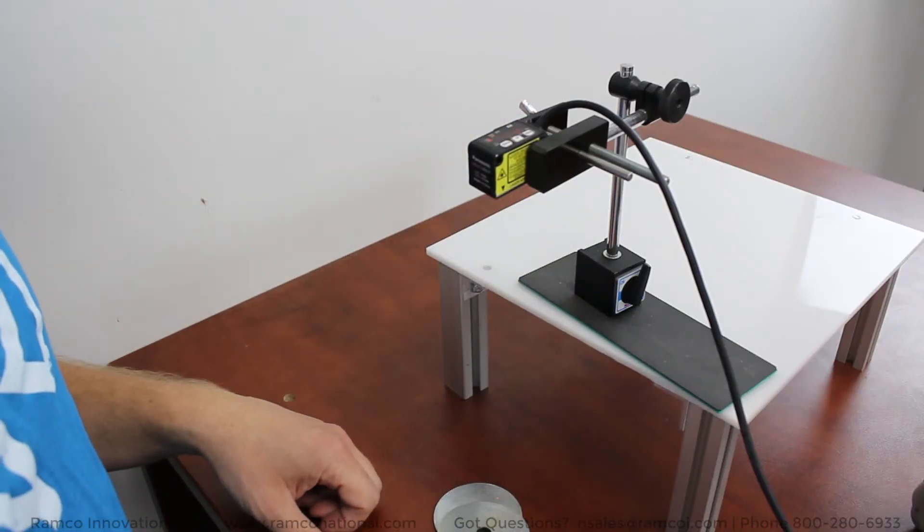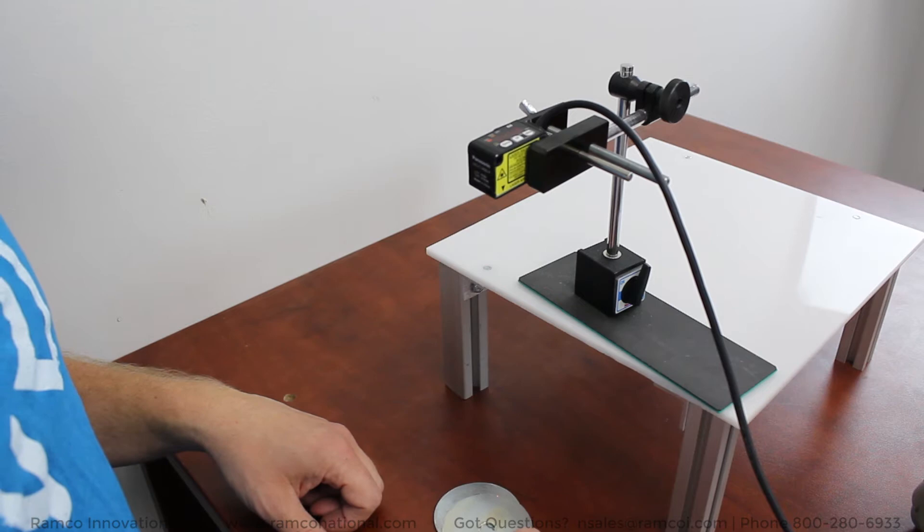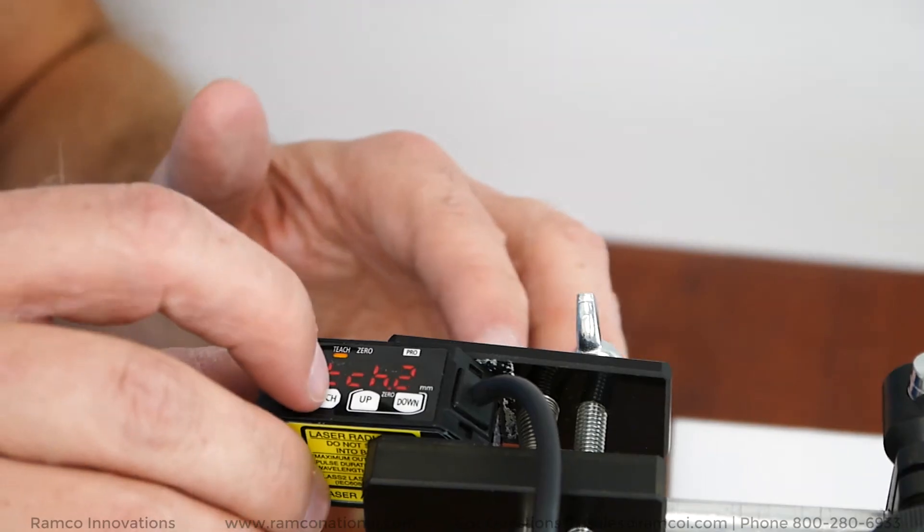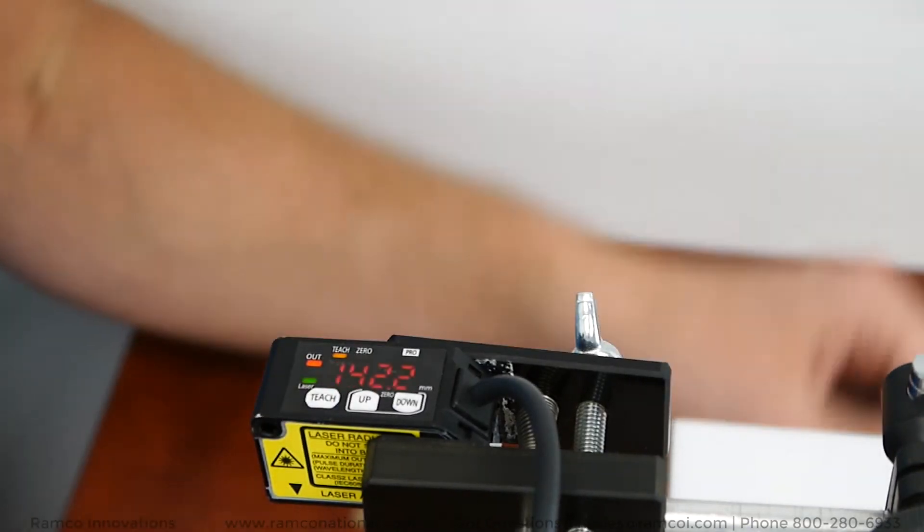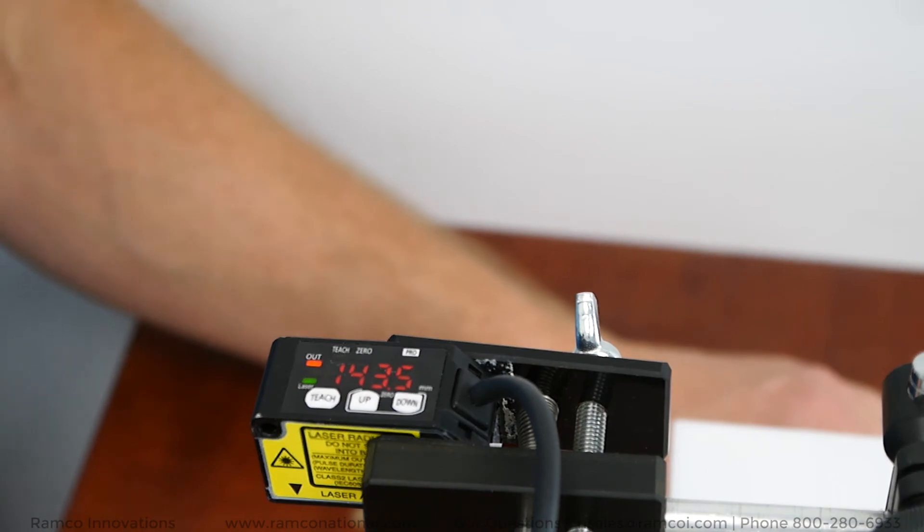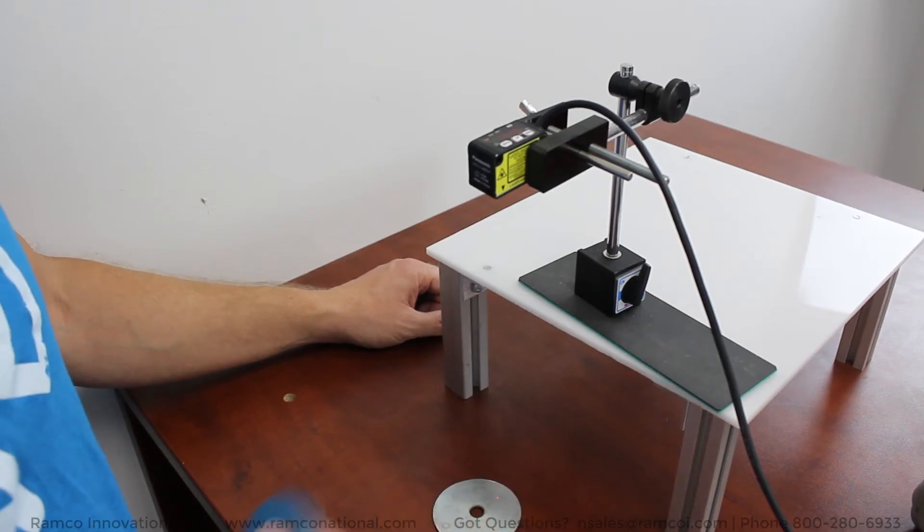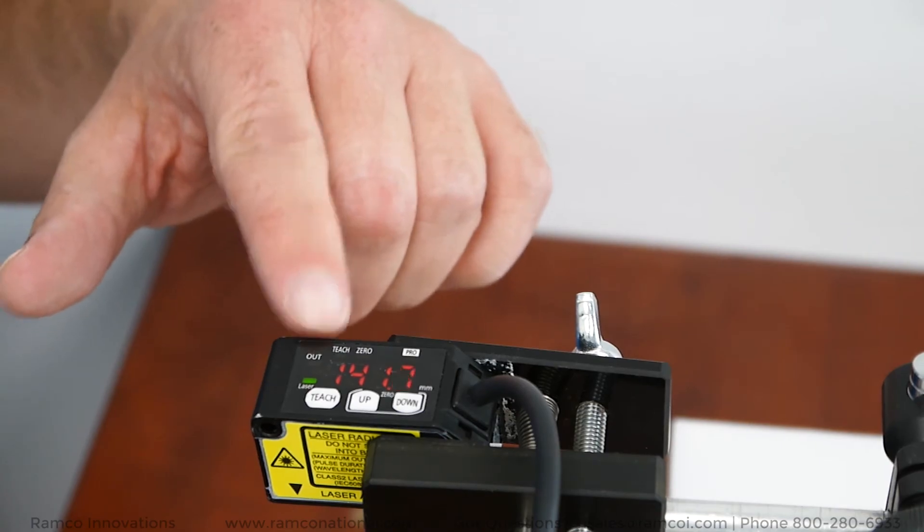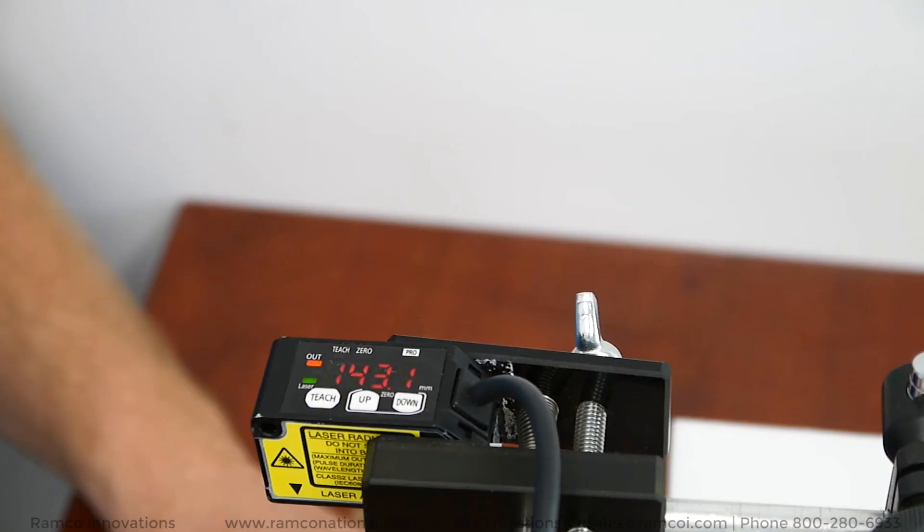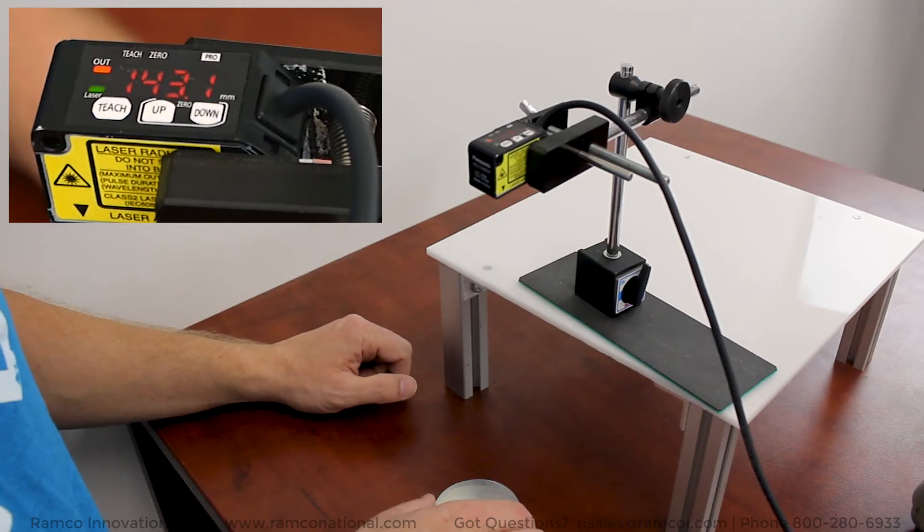I stick one washer underneath the part and hit the teach button. It'll then flash Teach 2. I then stick the second washer under and press the teach button again, and really that's all there is to it. As you can see, I have the sensor set so the output is off with one washer, and the output is on with two washers.